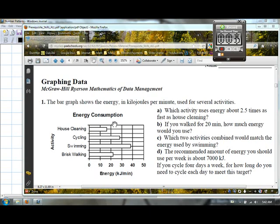So we have a bar graph here. Notice the bar graph has certain things. It has a title, energy consumption. It has a y-axis that says activity, and it has an x-axis giving the energy in kilojoules per minute. The activity is housecleaning, cycling, swimming, and brisk walking. It would appear as though the kind of data here isn't numerical at all. It's like we have words or names given to them, and so we call this nominal data.